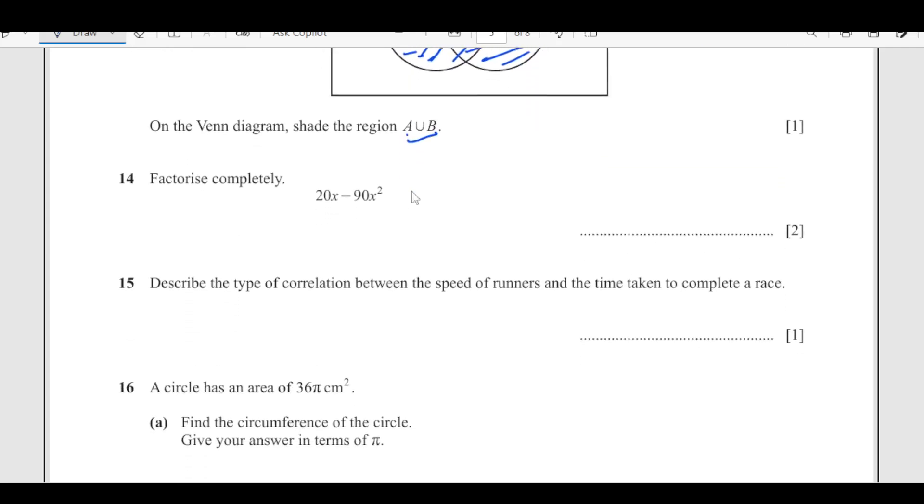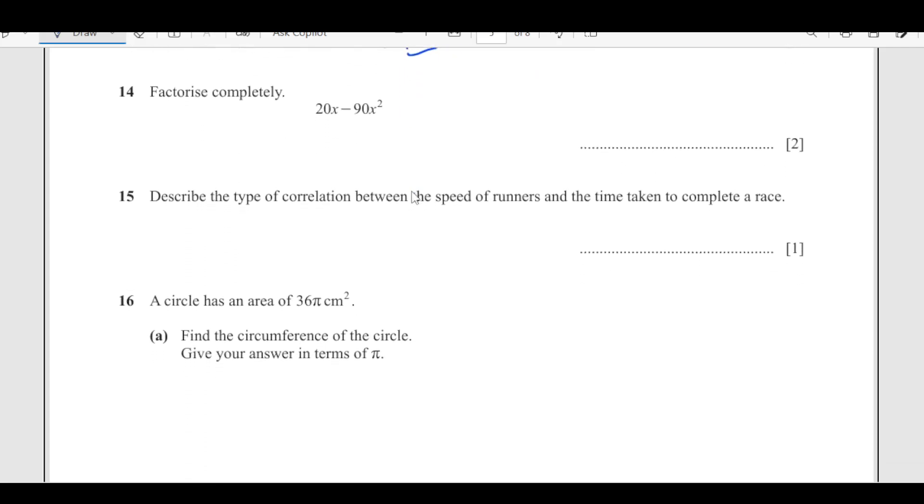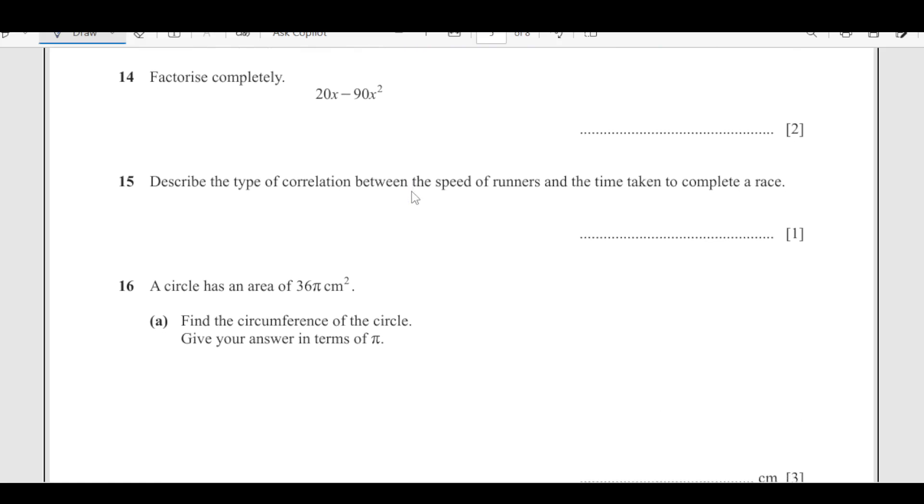Factorize completely. We will see what is common here. 10 is common and x is common. 10 times 2 is 20, 10 times 9x is 90x. So it is going to be 10x times (2 minus 9t).